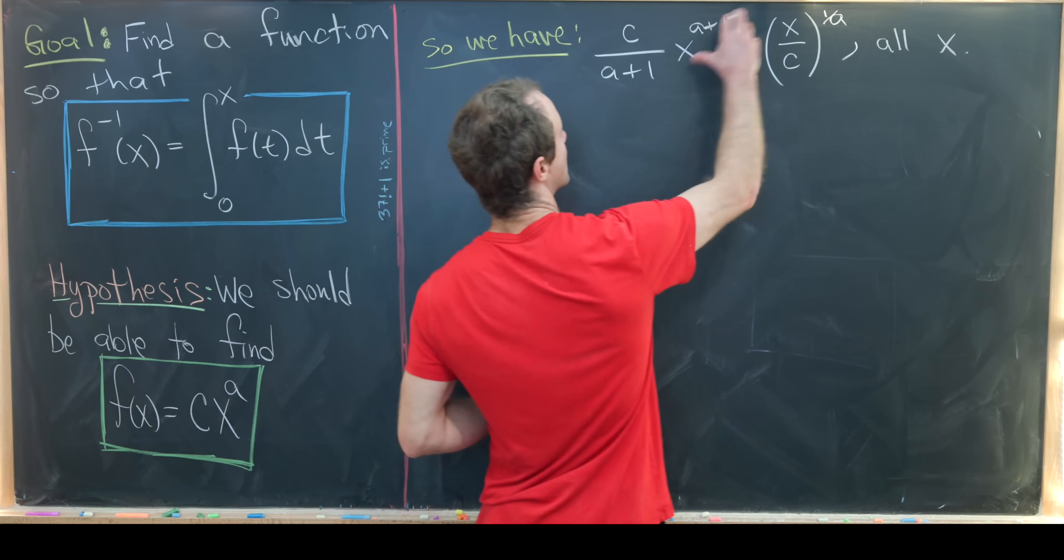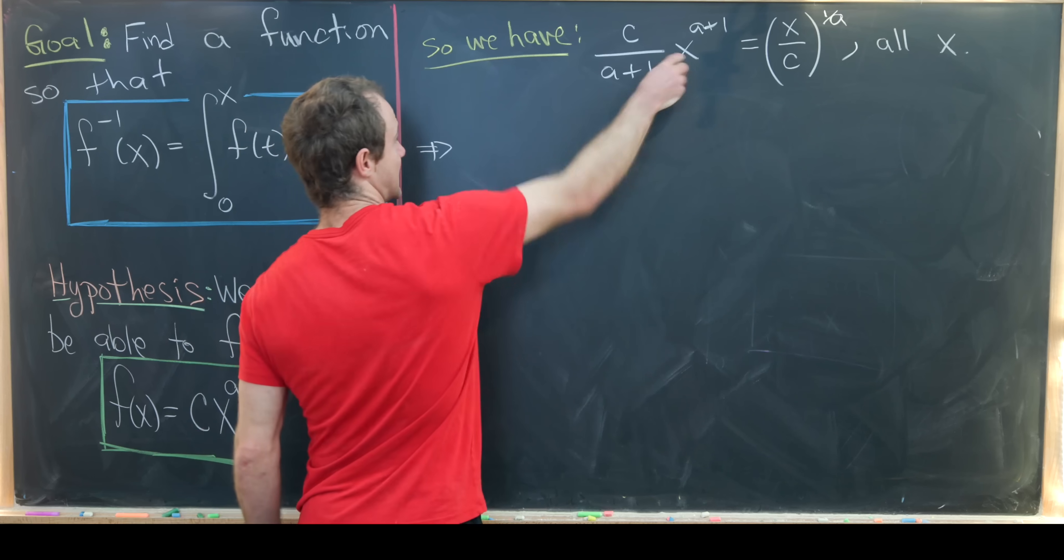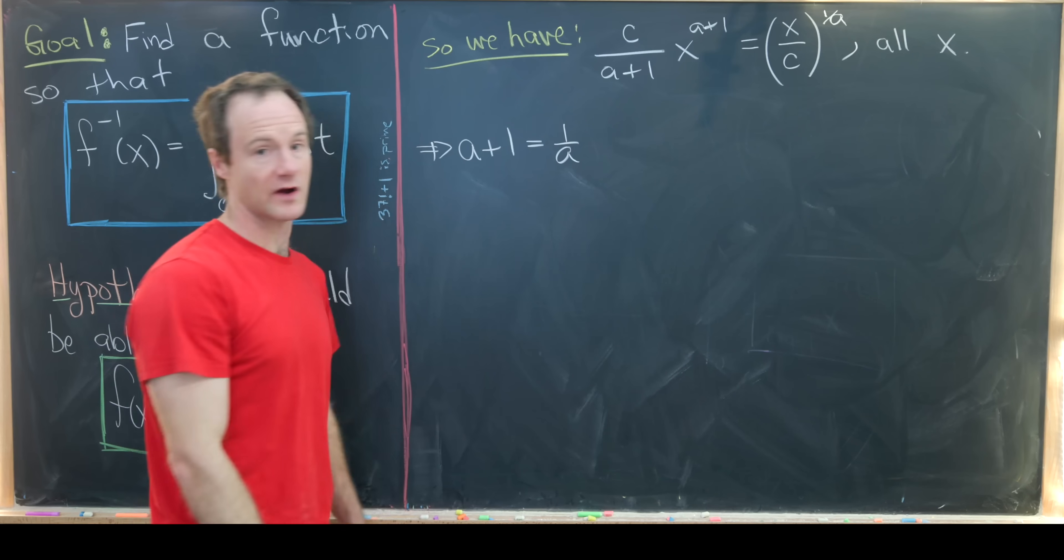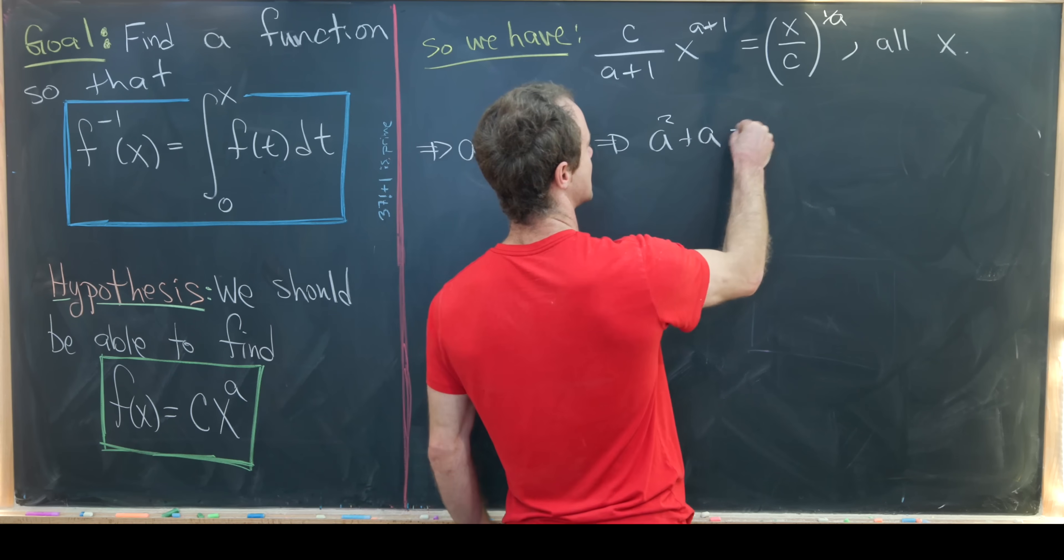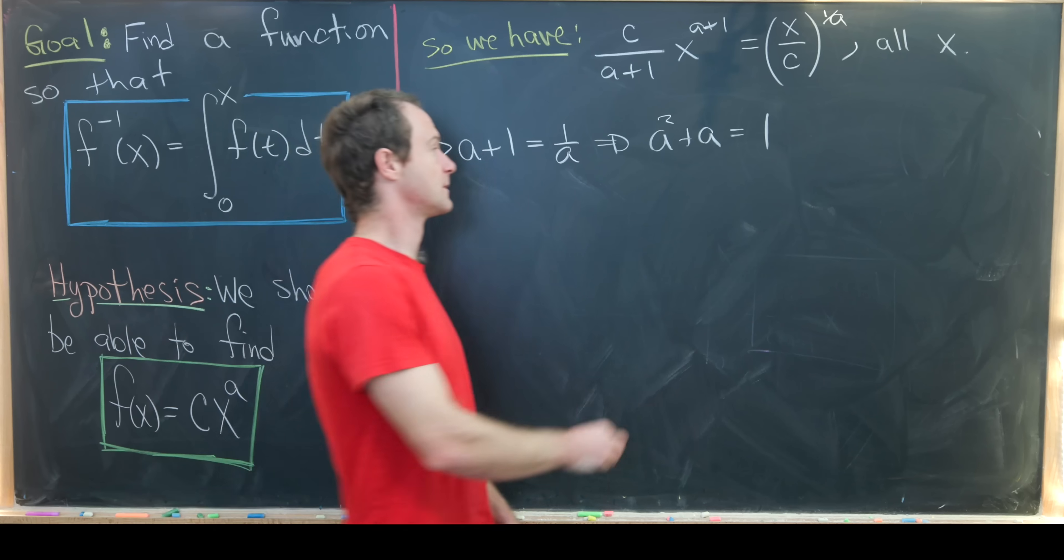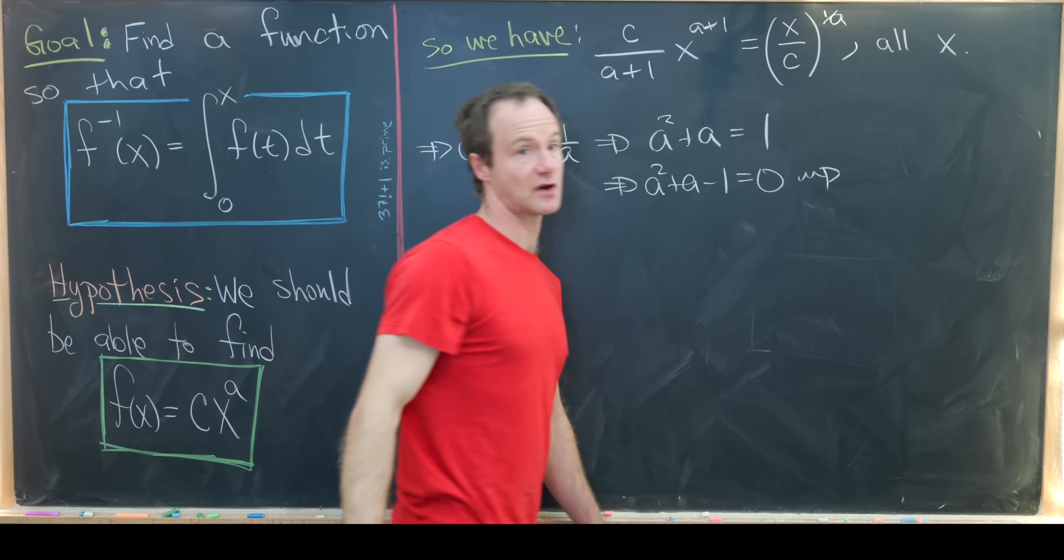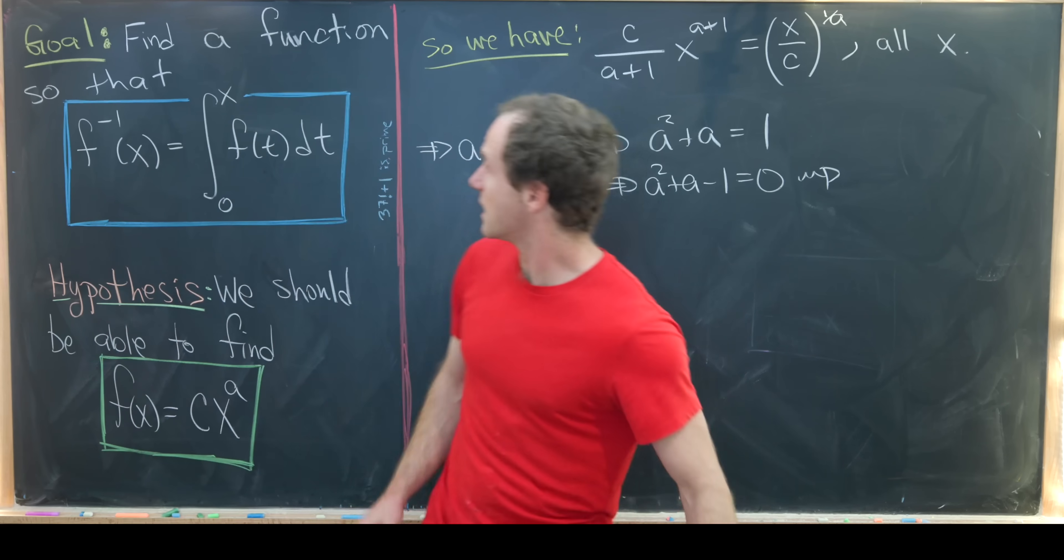The power of x needs to be the same on both sides of this equation. On the left hand side, the power of x is a+1. On the right hand side it is 1 over a. That gives us the quadratic equation a squared plus a equals 1, which is actually pretty similar to the quadratic equation that gives us the golden ratio. The numbers we come up with are related to the golden ratio.